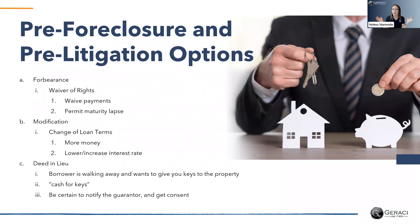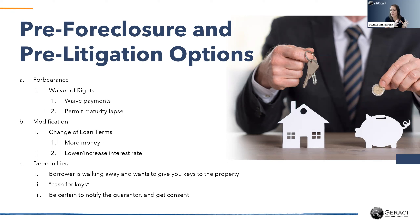To put it all in context: you made a loan, that loan was going great, and then something happens — the borrower can't pay, a construction project isn't panning out, or maybe the borrower's takeout option isn't available. You've got a little bit of a problem, but it's not necessarily at a point where you want to foreclose or take some sort of litigation action. You want to work with your borrower. So if you've got some problems but you're not quite ready to take a more extreme option, we have some options here: forbearances, modifications, and deeds in lieu of foreclosure.